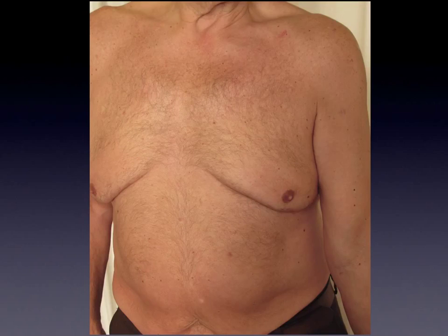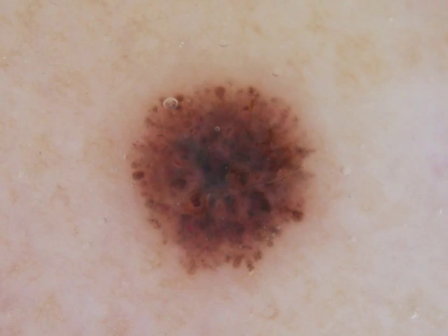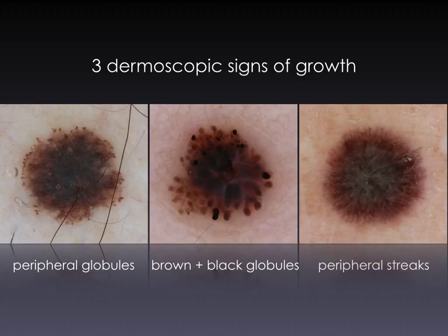In the second case, we see a tiny clinically inconspicuous lesion on the arm of an 80-year-old man. Upon dermoscopy, the lesion shows clear signs of growth, namely peripheral globules. As 80 years is the age of nevus involution, the lesion was excised and diagnosed as early invasive melanoma. Importantly, besides peripheral globules, black globules and peripheral streaks are further signs of growth and should always prompt excision when seen in the period of nevus involution.